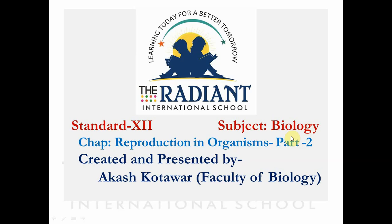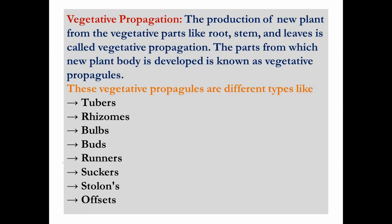What exactly is vegetative propagation? Vegetative propagation refers to the production of new plants from the vegetative parts — like roots, stems, and leaves — of the parent plant body. The new plant will develop either from root, stem, or leaves. This kind of reproduction is called vegetative reproduction, as roots, stems and leaves are considered vegetative parts of the plant body.